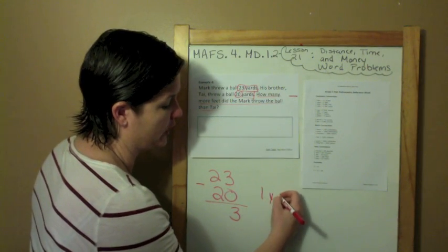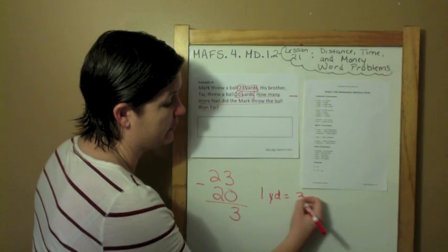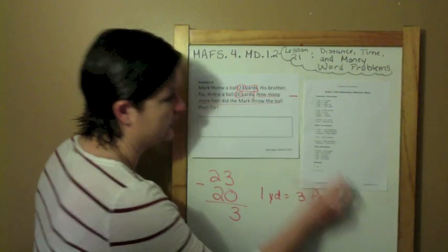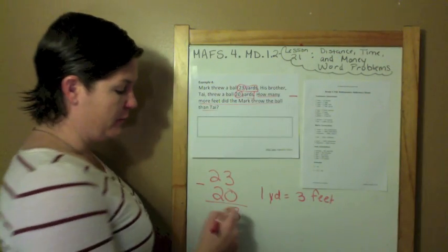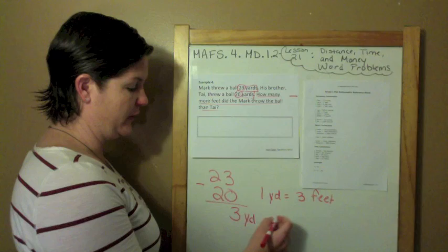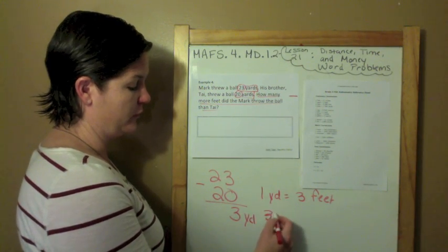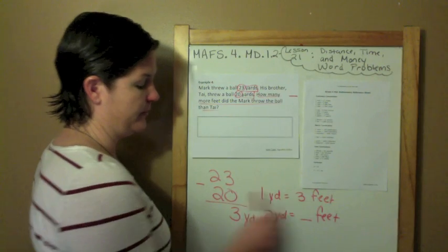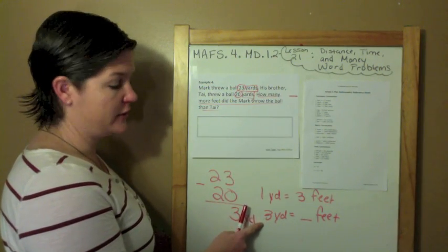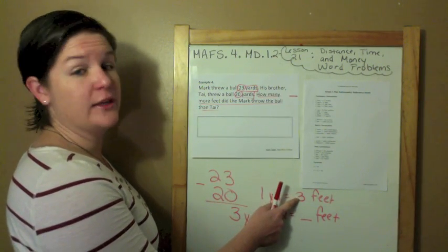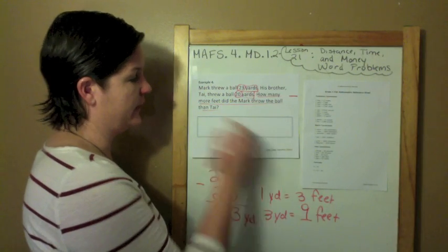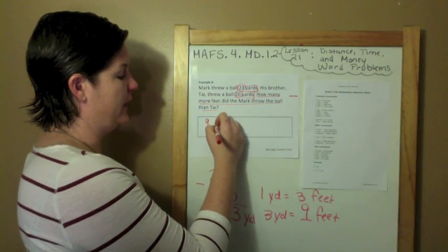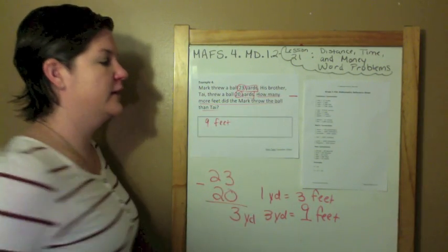One yard equals three feet. But we have three yards that we need to convert into feet. So three yards equals how many feet? One times three gives us three. So we got to do three times three, which equals nine. So Mark threw it nine more feet than Ty.